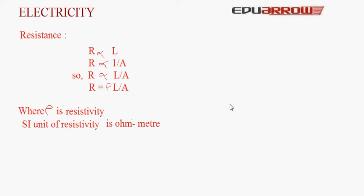For example, rubber is an insulator. The substances which have moderate resistivity are very applicable in our daily life. The heaters and electric irons we use in home appliances are all based on the concept of resistivity. As they have a moderate resistivity, current can flow quite easily, but this electric energy is converted into heat energy, which is what we use in home appliances.